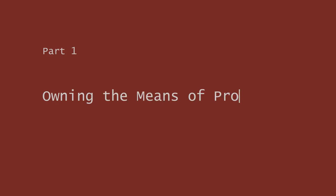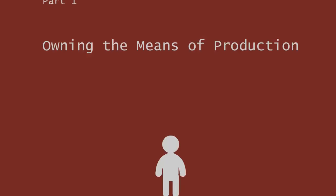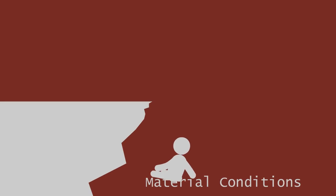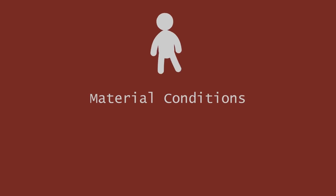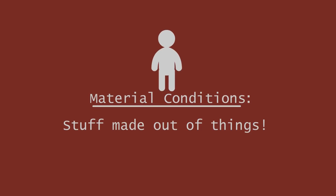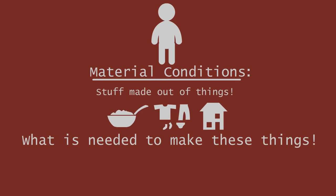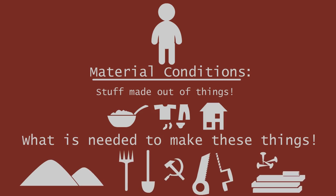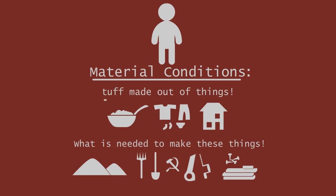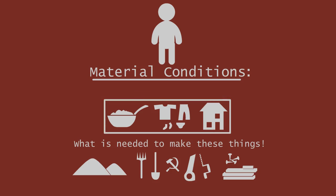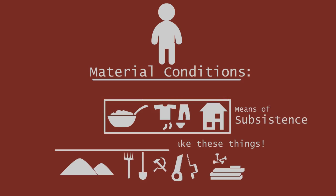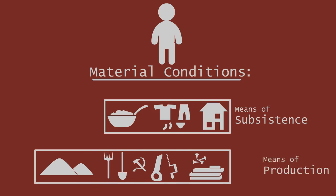Owning the means of production. You depend on material conditions to survive — this is stuff made out of things, like food, clothing, and shelter. You also depend on what is needed to make these things, like land, farming tools, building tools, building materials, that kind of thing. The first kind of thing is called the means of subsistence, and the second is called the means of production.